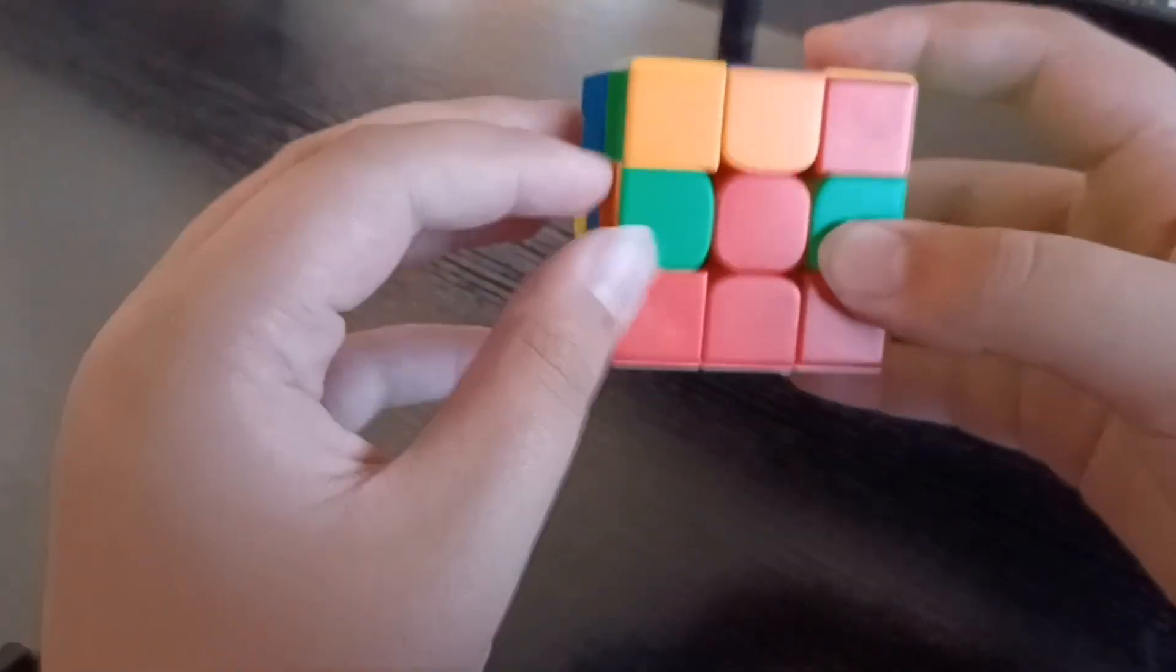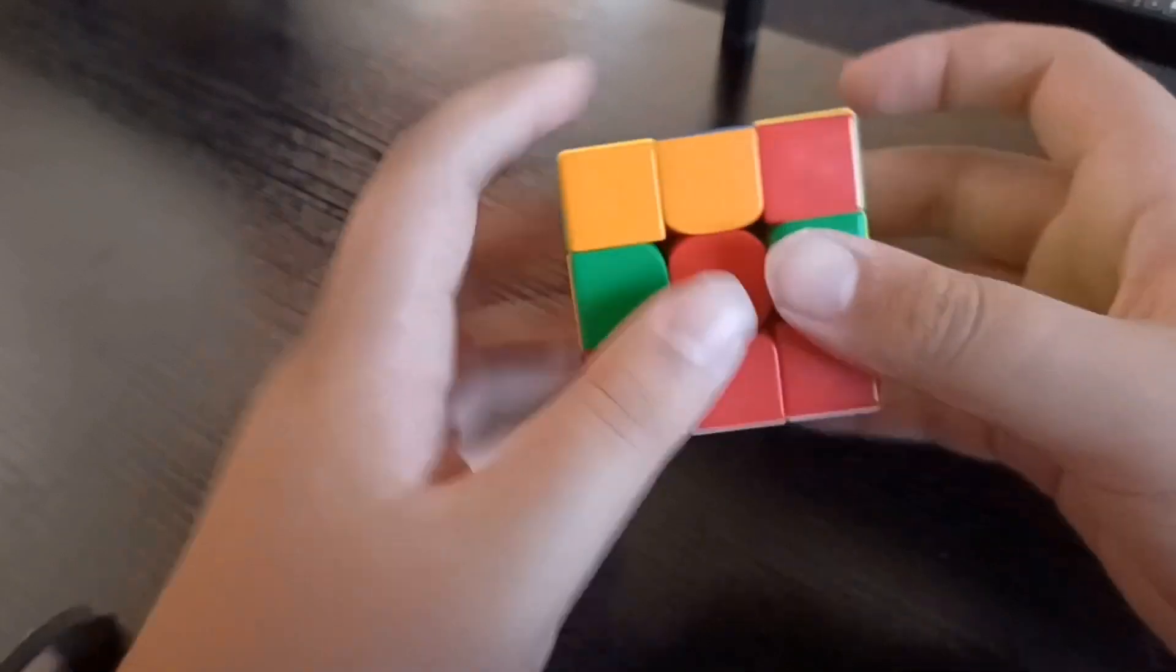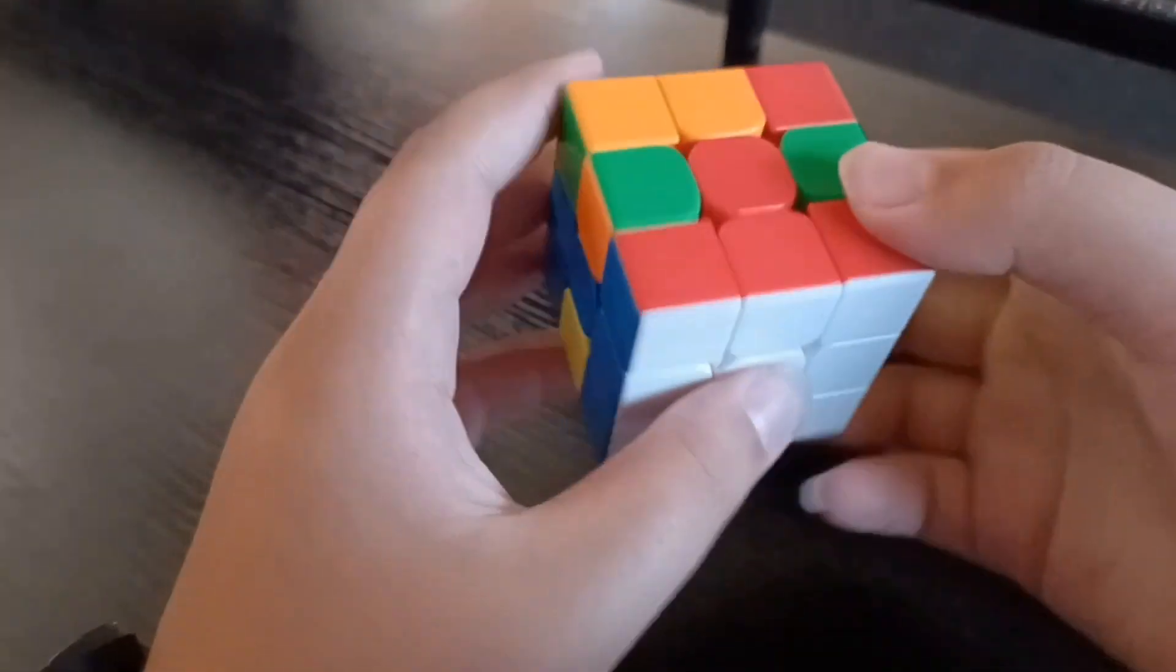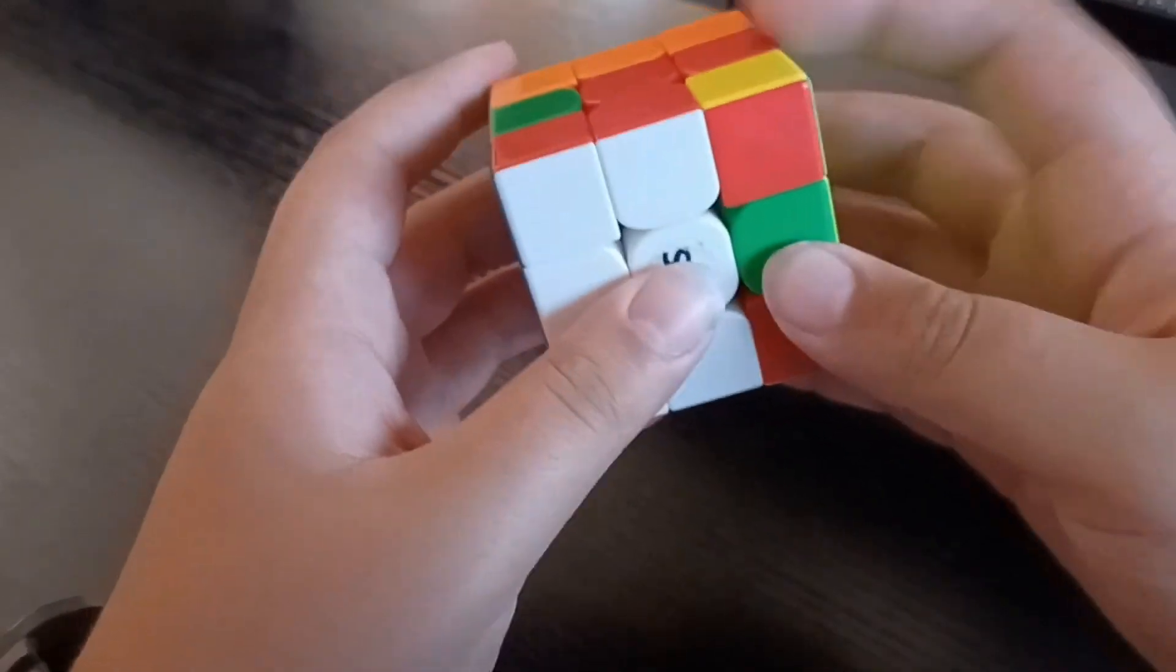Okay so when we're making the second layer we need to add the edges in the right places. Just like we did with the corners, besides that it has one less color, we're going to put these in to where they go.